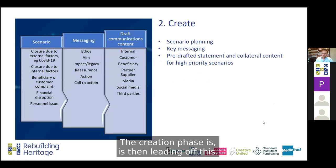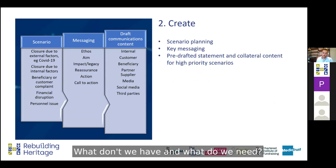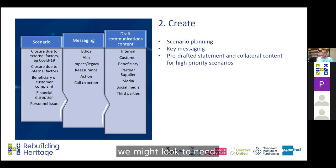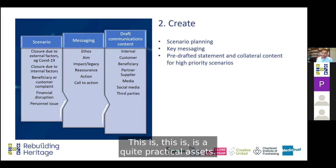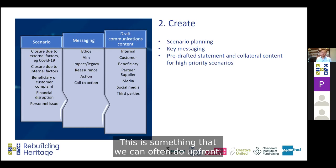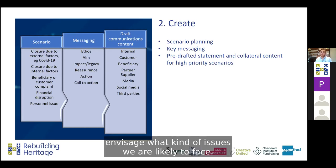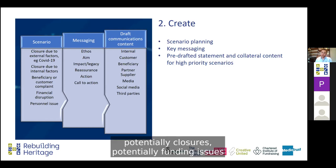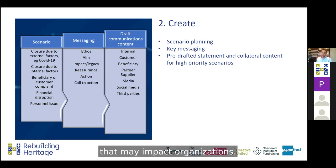The creation phase leads off from the audit. So what materials do we have, what don't we have, and what do we need? You can see we have three columns of different collateral we might look to need — these are quite practical assets. Firstly, scenarios. This is something we can often do upfront — envisage what kind of issues we are likely to face. We've already talked about the implications of Covid, potentially closures, potentially funding issues, but there will be other issues that may impact organisations.